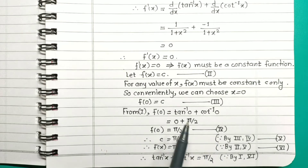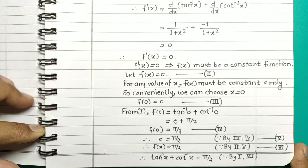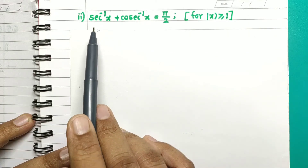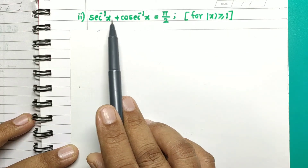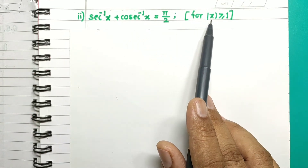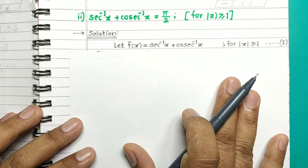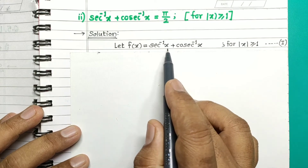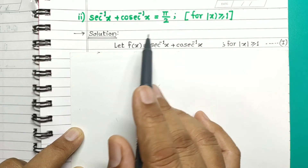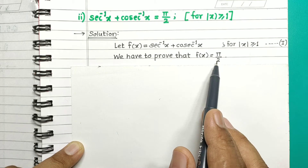I hope all of you are getting this solution — go through it again and try to solve it on your own. In the second sub-question, we have to prove that sec inverse x plus cosec inverse of x is equal to pi by 2 for mod x greater than or equal to 1. Let f of x equal sec inverse x plus cosec inverse of x, and we have to prove that f of x is equal to pi by 2.